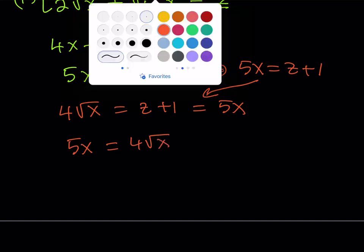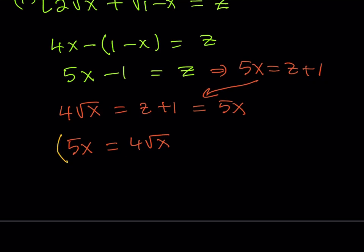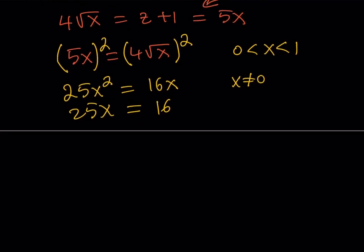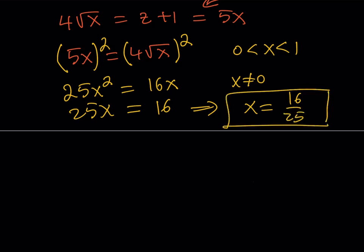We can square both sides, always paying attention to the domain — x needs to be between 0 and 1. Squaring gives 25x squared is equal to 16x. Since x does not equal 0, we divide both sides by x to get 25x equals 16. Dividing both sides by 25 gives x equals 16 over 25. This satisfies the equation because it meets the domain criteria.